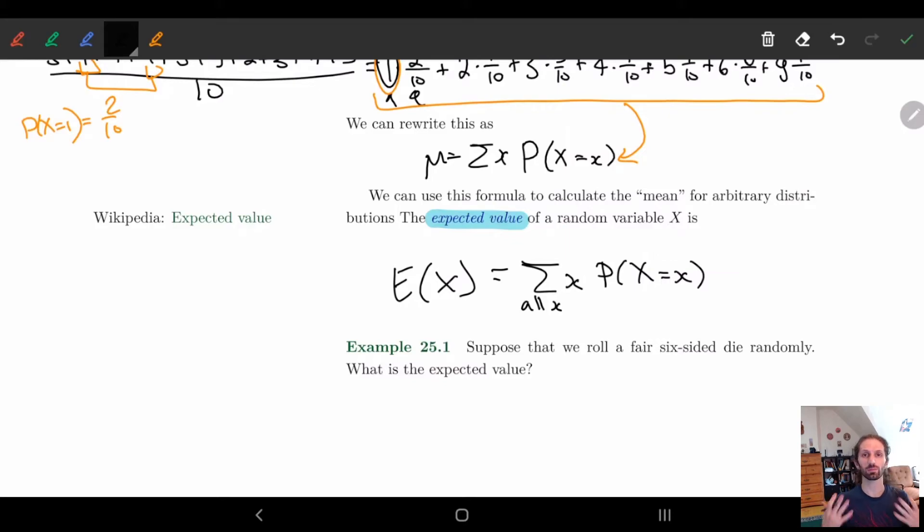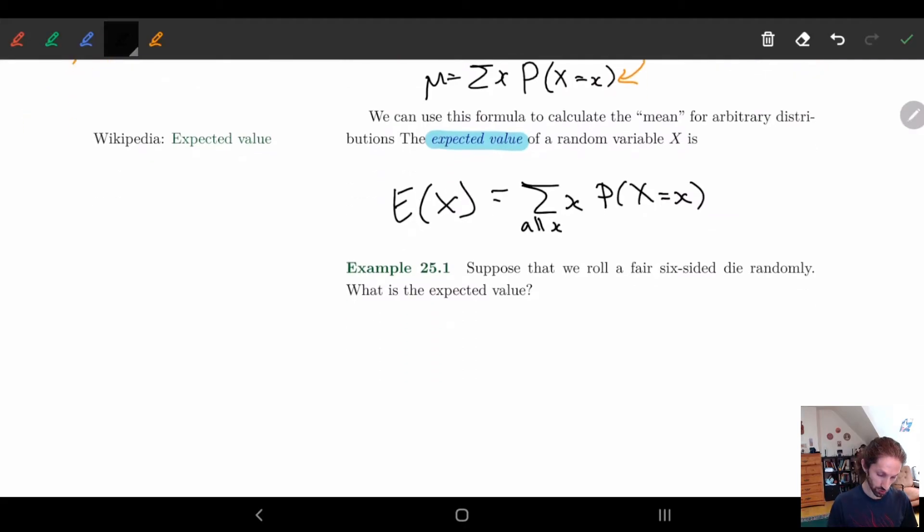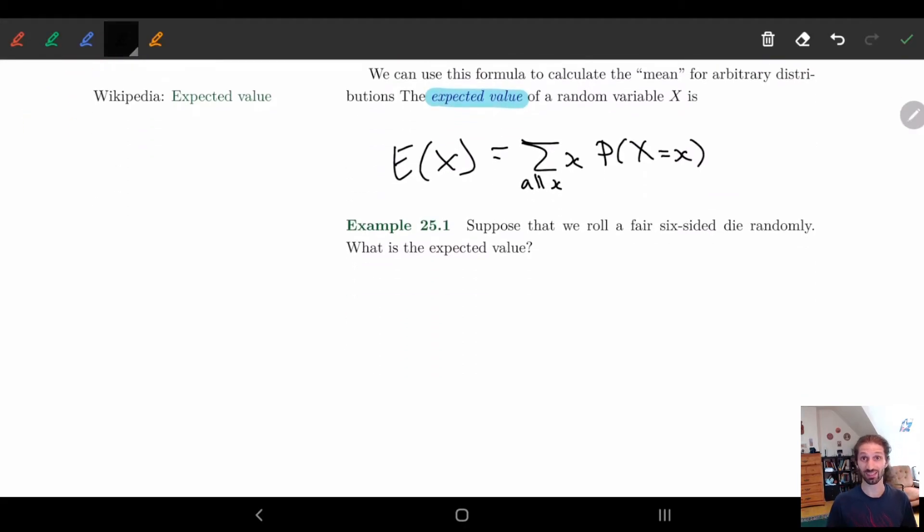And then we'll get into something a little more complicated to kind of see what happens. So here we're going to suppose that we roll a fair six-sided die. So I take a die, I roll it. It's a fair six-sided die. So any number can kind of come up. And so, well, what's the expected value? Okay. So the expected value of x, where x is the number that shows up, that is rolled. And so what we want is the sum of all possible x from x, probability of x equals x.